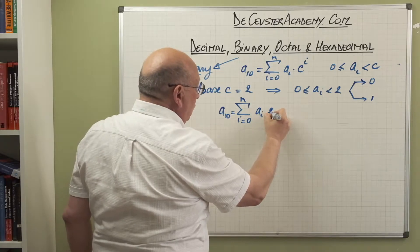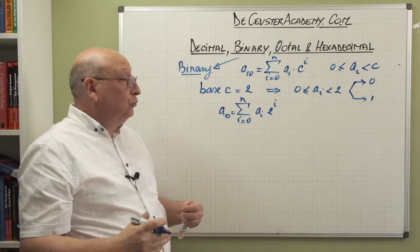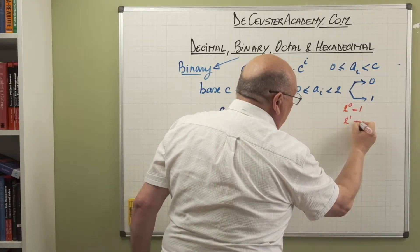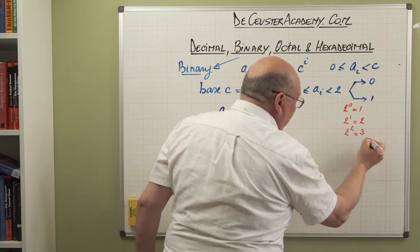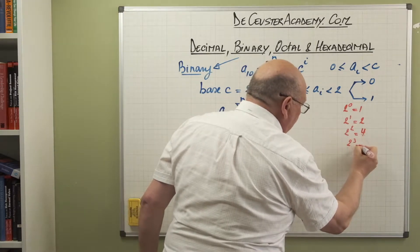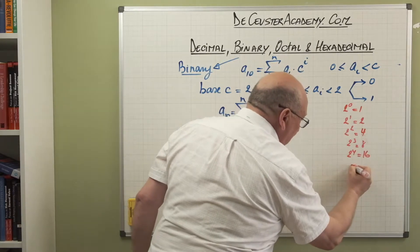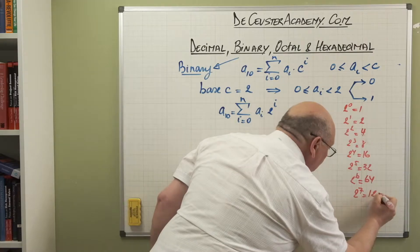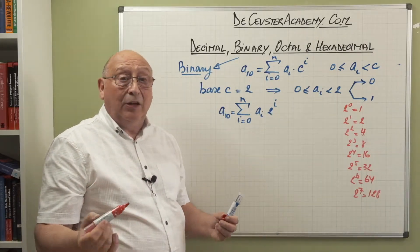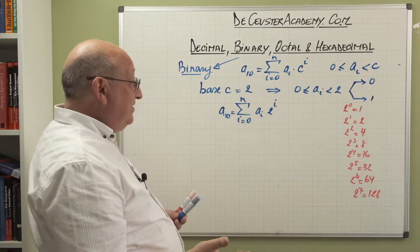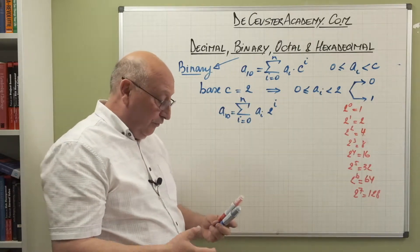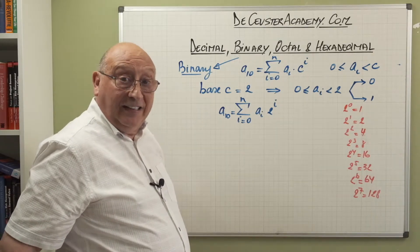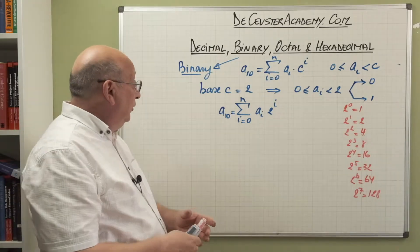The formula becomes: a number in base 10 equals the sum of a_i times 2 to the power i. It's useful to know the powers of 2: 2^0 = 1, 2^1 = 2, 2^2 = 4, 2^3 = 8, 2^4 = 16, 2^5 = 32, 2^6 = 64, 2^7 = 128. You'll notice these values — 64, 128, and so on — appear frequently in computer specifications.